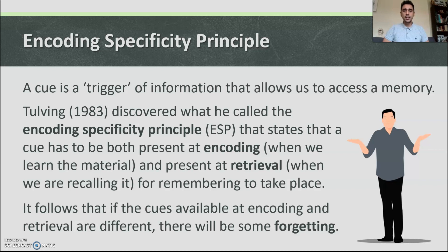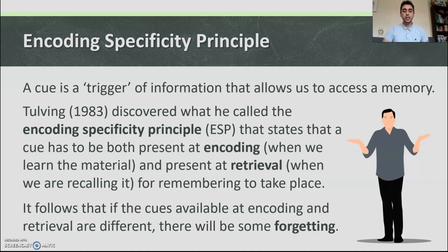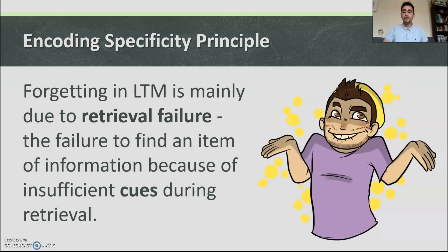Tulving discovered what he called the encoding specificity principle — ESP — which states that a cue has to be both present at encoding, when we learn the material, and present at retrieval, when we recall it, for remembering to take place. It follows that if the cues available at encoding and retrieval are different there will be some forgetting. Forgetting in long-term memory is mainly due to retrieval failure — the failure to find an item of information because of insufficient cues during retrieval.